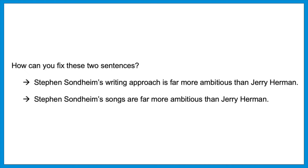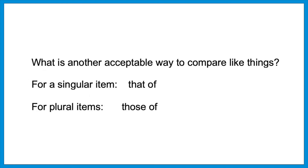Now for a plural example: 'Stephen Sondheim's songs are far more ambitious than...' — you might say 'Jerry Herman's songs,' but the test wants: 'those of Jerry Herman.' By saying 'those of,' it refers back to the plural word 'songs.' So for a singular item you say 'that of,' and for plural items you say 'those of.' Let's see how this comes up on a question.